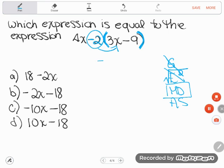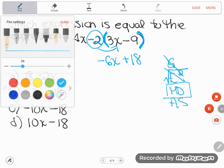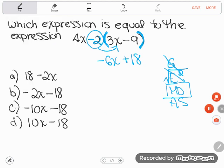So negative 2 times 3x is negative 6x. And negative 2 times negative 9, a negative times a negative is a positive, and 2 times 9 is 18. So that's what I got from that part of the problem. But don't forget there was another term in this expression that I haven't touched yet. The 4x from above will drop down. And so now I have 4x - 6x + 18.